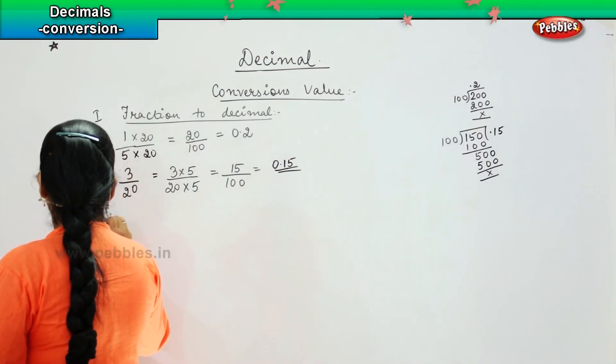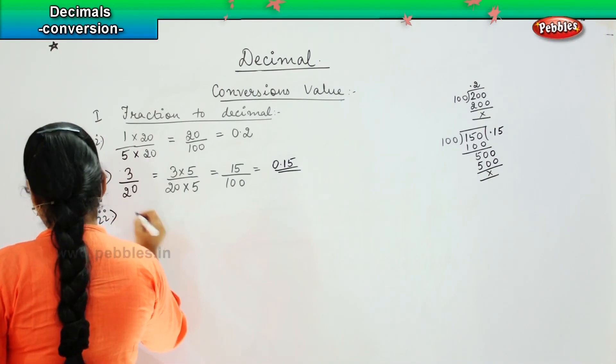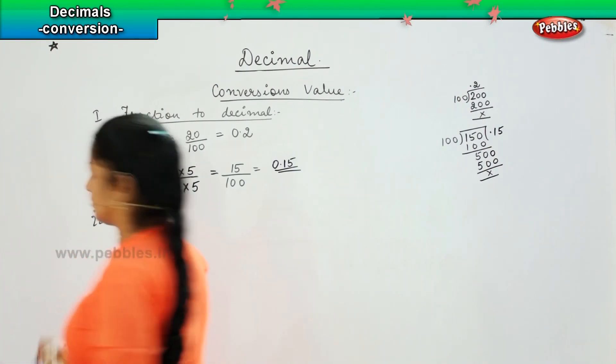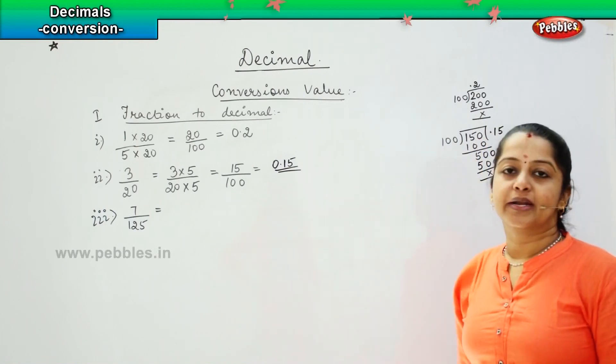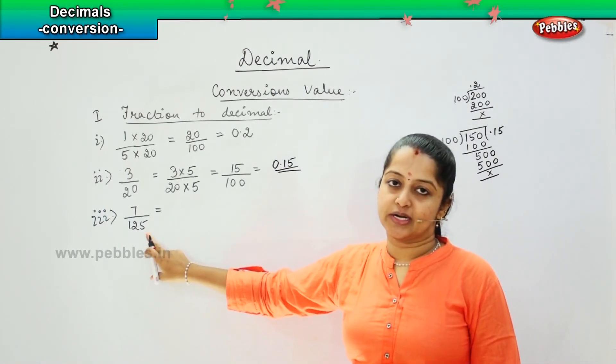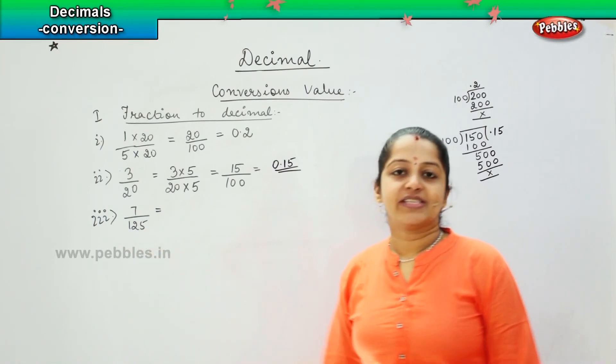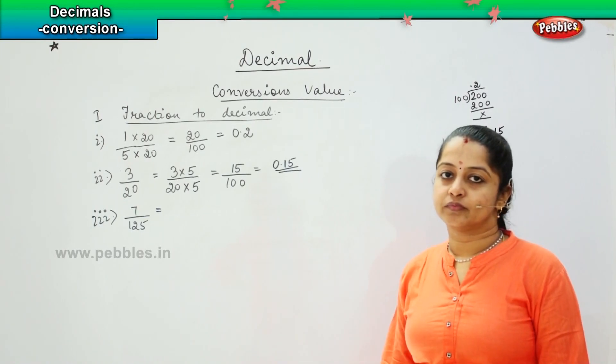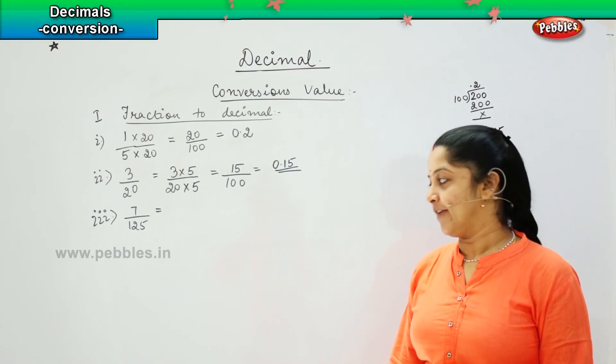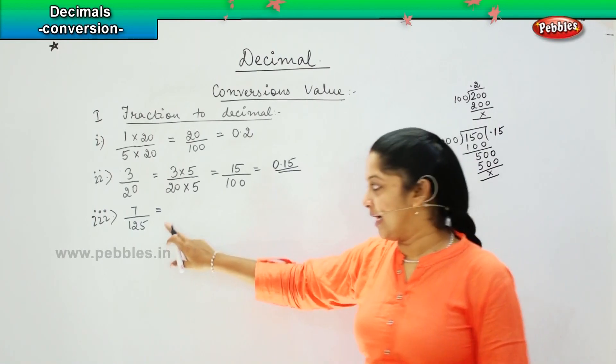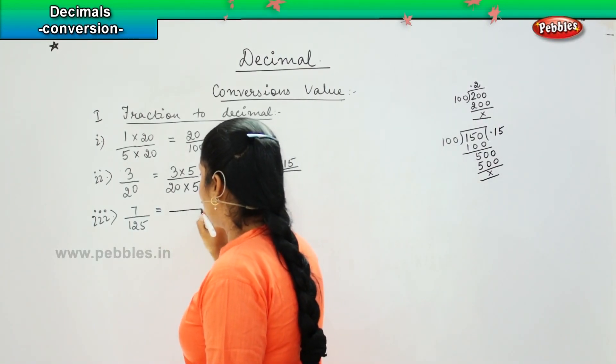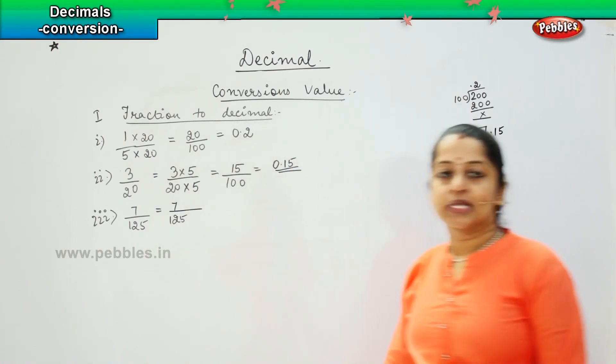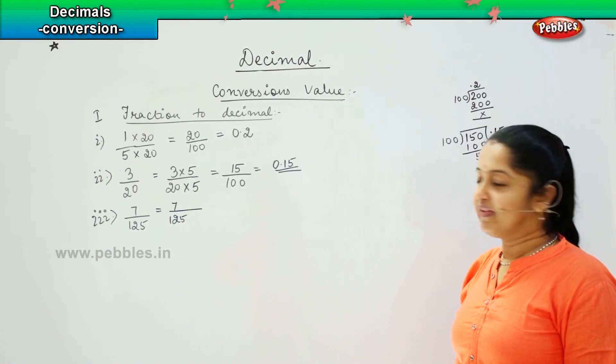So the next example is 7/125. So now which is the nearest number in which you can convert this, children? Is it possible to convert in 100? No, because 125 is greater than 100, right? So after 100, what is the next number in 0's value? Very good. It is 1000, right? So now we will be converting this number into 1000. So how many times will 1000 get divisible by 125? Shall we divide and see?